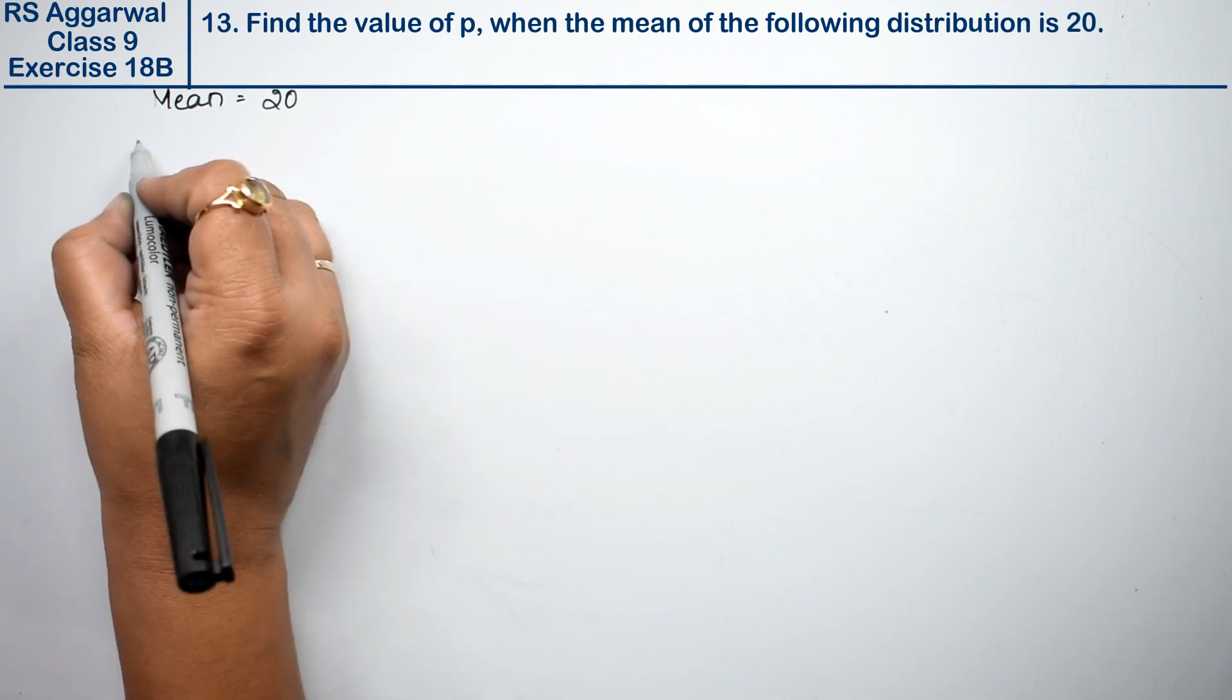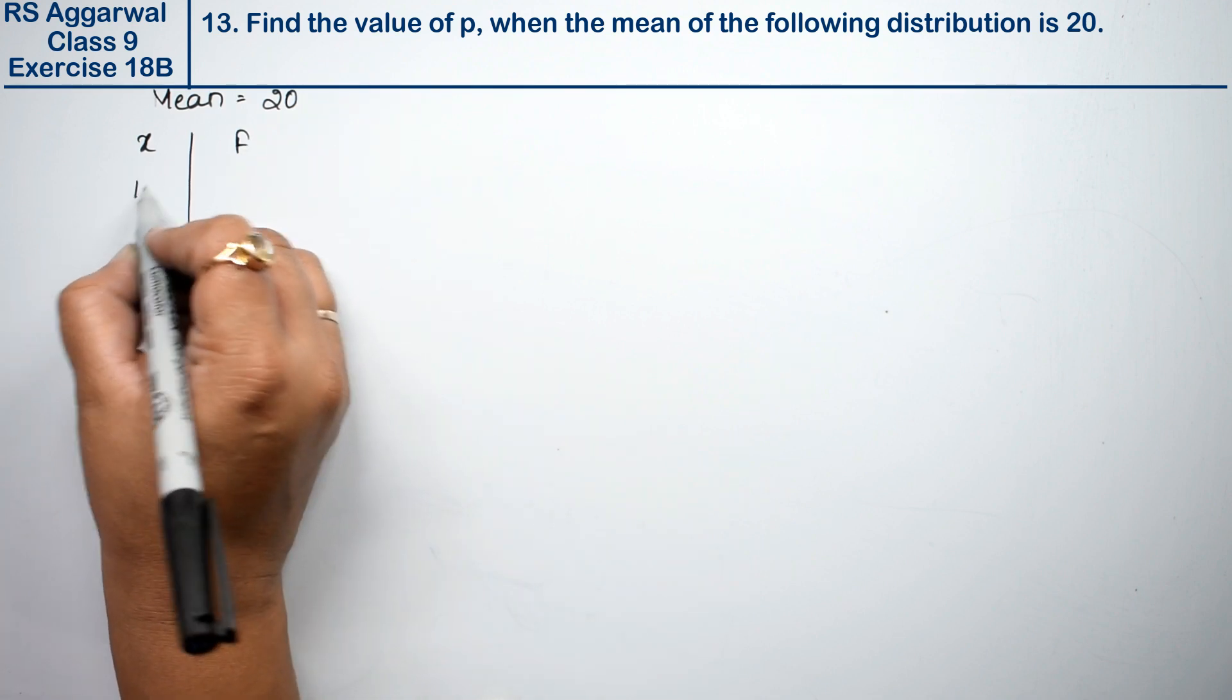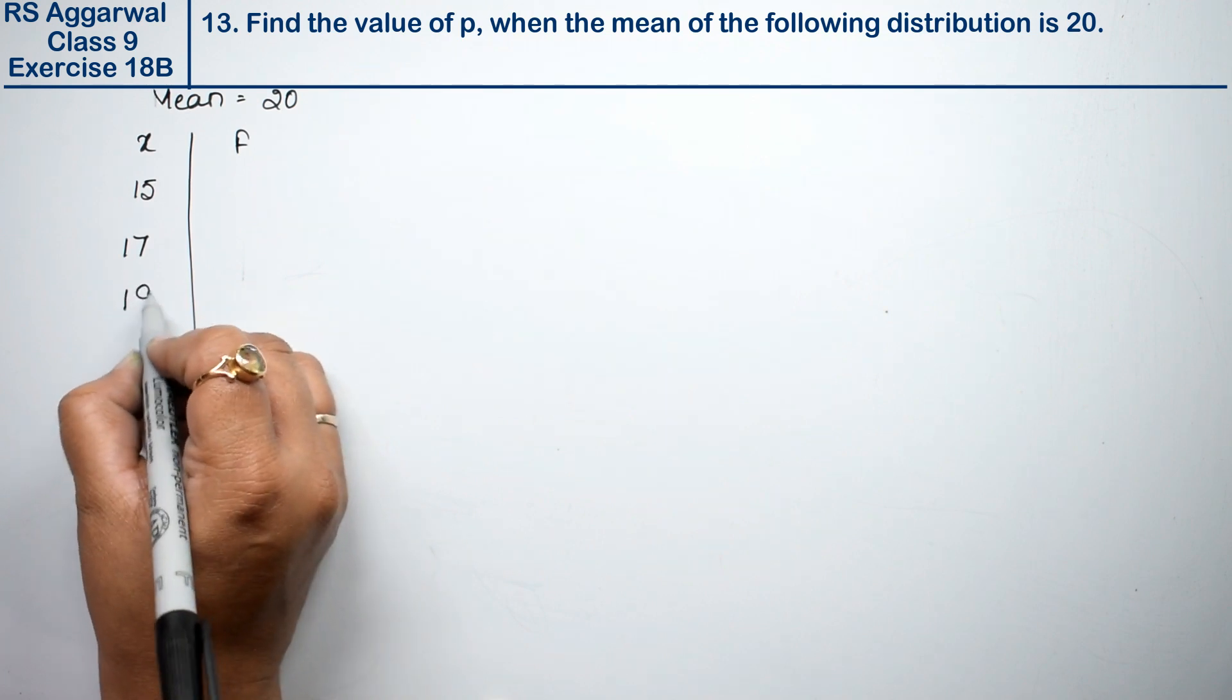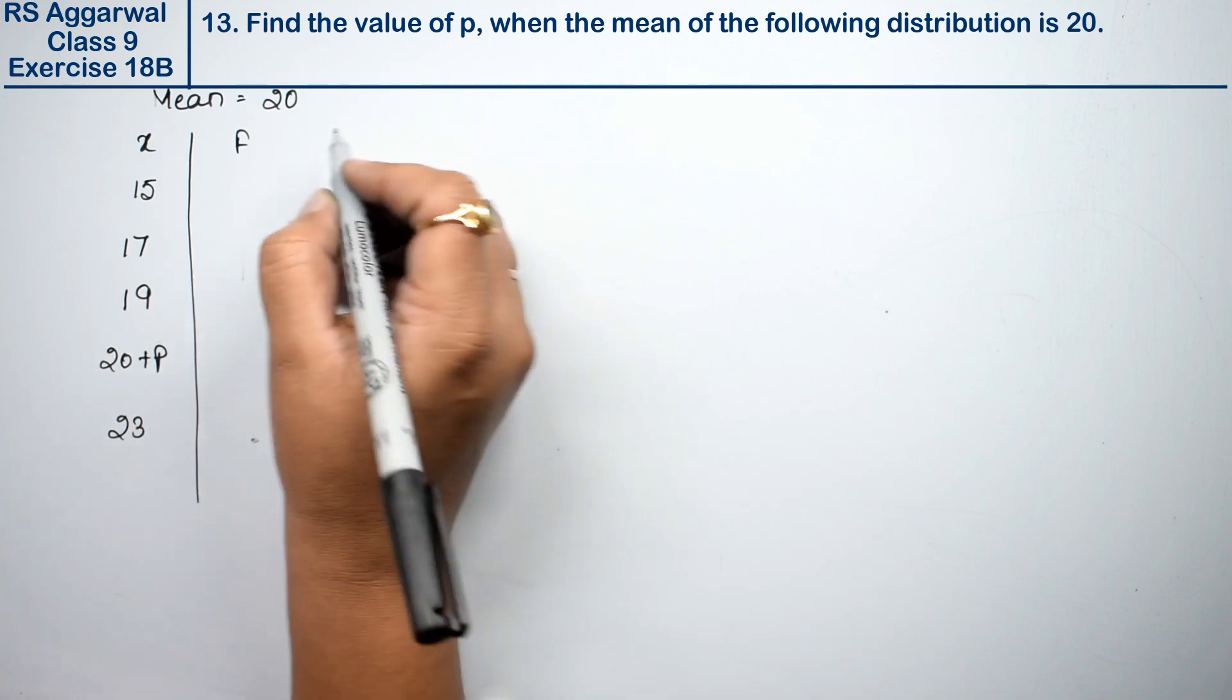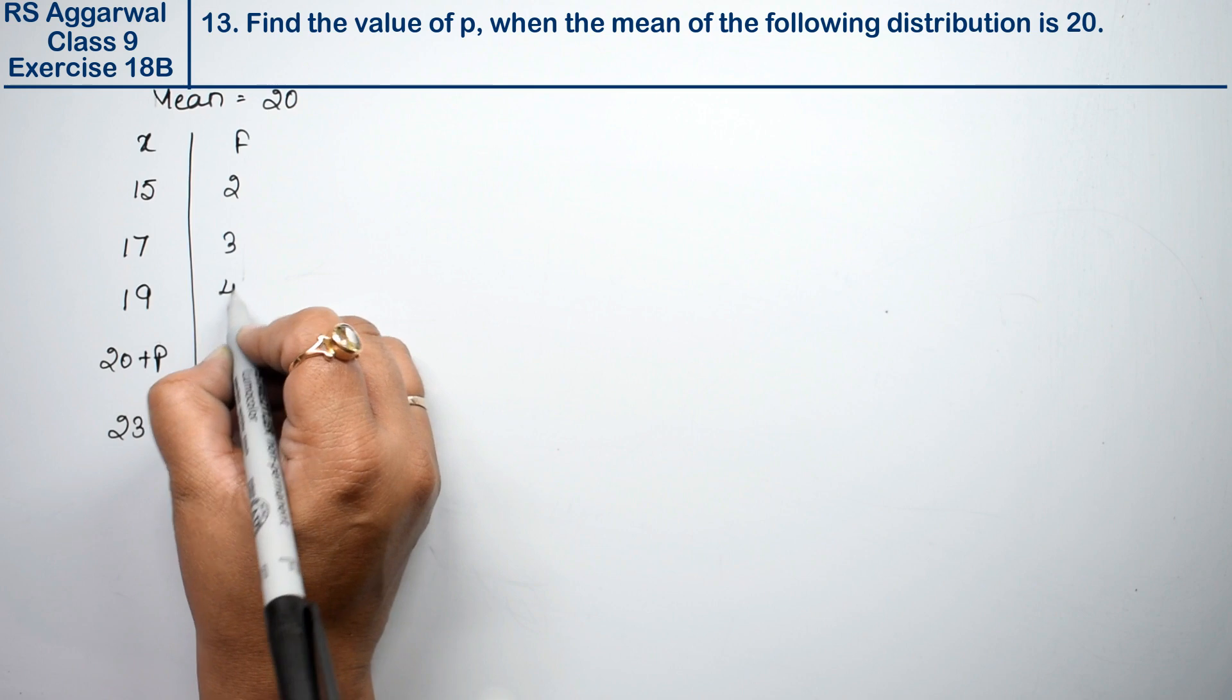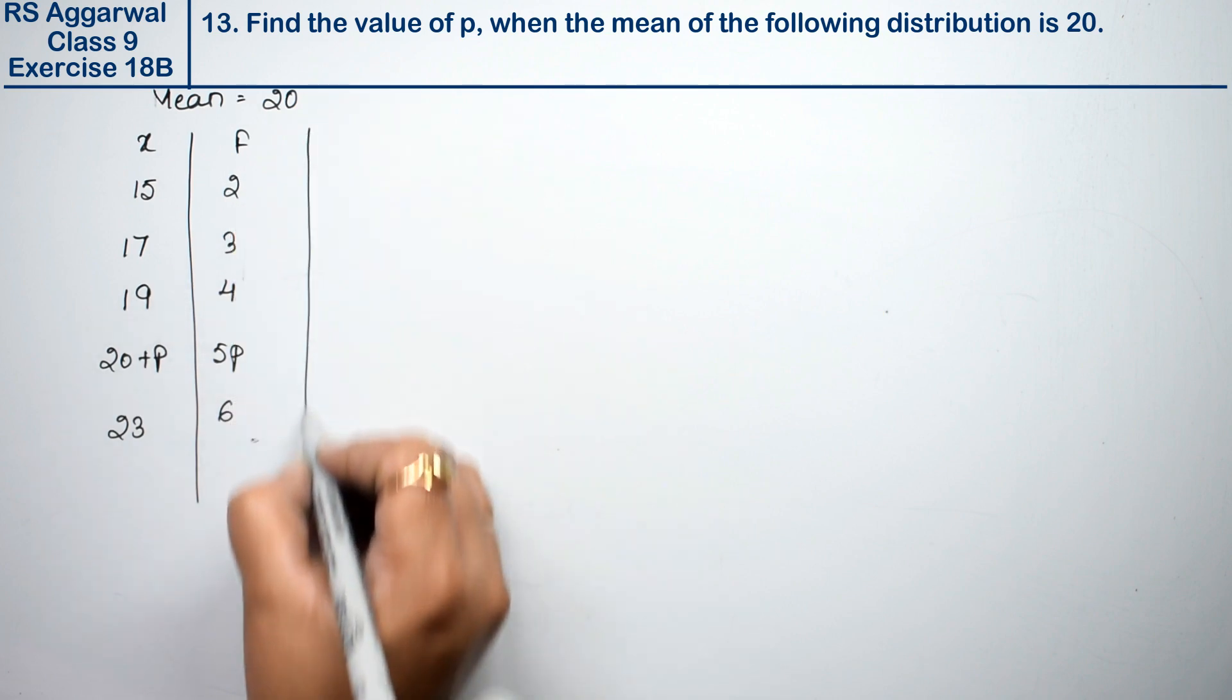We have x and f values. X values are 15, 17, 19, 20 plus p, and 23. F values are 2, 3, 4, 5p, and 6. So let's see how to find it.